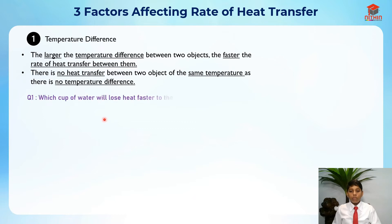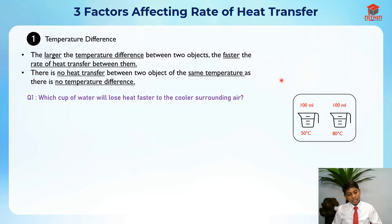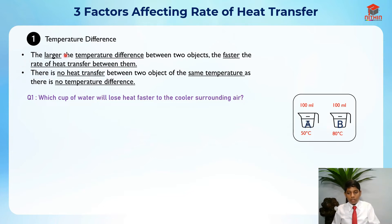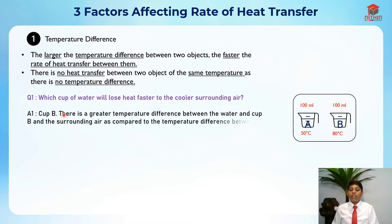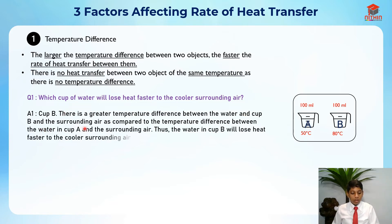Question one: which cup of water will lose heat faster to the cooler surrounding air? Cup A is 50 degrees and 100 ml; Cup B is 80 degrees and 100 ml. The larger the temperature difference, the faster the rate of heat transfer. Cup B has a larger temperature difference with the surrounding air than Cup A, so Cup B will lose heat faster to the cooler surrounding air.